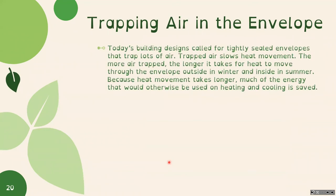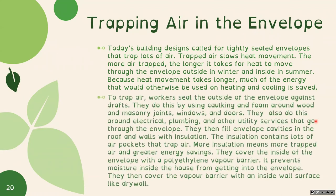Today's building designs call for tightly sealed envelopes that trap lots of air. Trapped air slows heat movement — the more air trapped, the longer it takes for heat to move through the envelope outside in winter and inside in summer, saving energy. To trap air, workers seal the outside of the envelope against drafts using caulking and foam around wood and masonry joints, windows, and doors, and also around electrical, plumbing, and other utility services. They then fill envelope cavities in the roof and walls with insulation. The insulation contains lots of air pockets, and they cover the inside with a polyethylene vapor barrier to prevent moisture, then drywall.